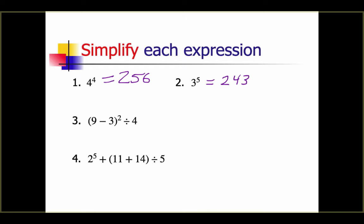Number 3: we have 9 minus 3 in parentheses, all squared, divided by 4. We need to use our order of operations. The first thing we look for is grouping symbols — we have 9 minus 3 inside parentheses, so we do that first: 9 minus 3 is 6. Now we have 6 squared divided by 4. Next we look at exponents: 6 squared is 36. Then multiplication and division: 36 divided by 4 is 9. So our answer is 9.